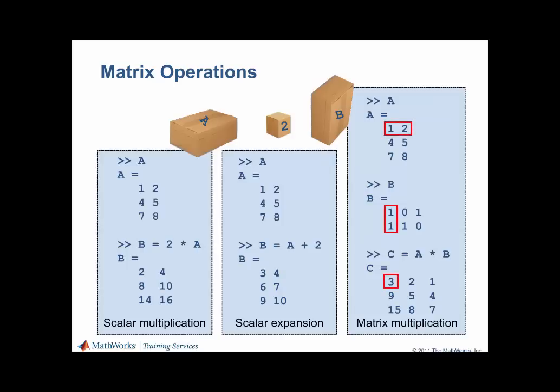To multiply two matrices A and B, the inner dimensions must agree. This means that the number of columns in A and the number of rows in B have to be equal. For addition and subtraction, both matrices must have the same dimensions.